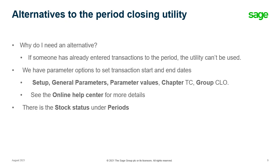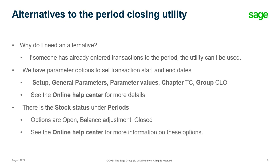There is also a stock status under periods. The options are: open — transactions can be posted; balance adjustments — only adjustments can be posted; or closed. Again, this is only for stock transactions. See the online Help Center for more information on these options.